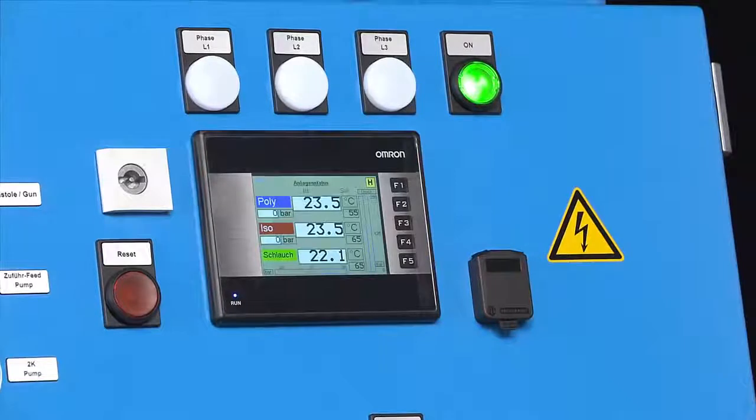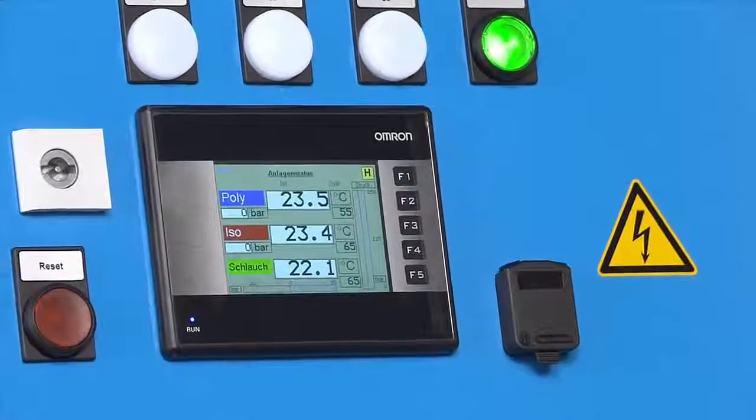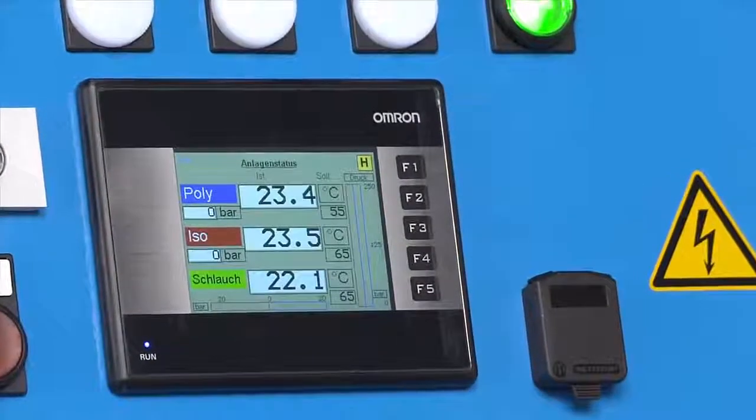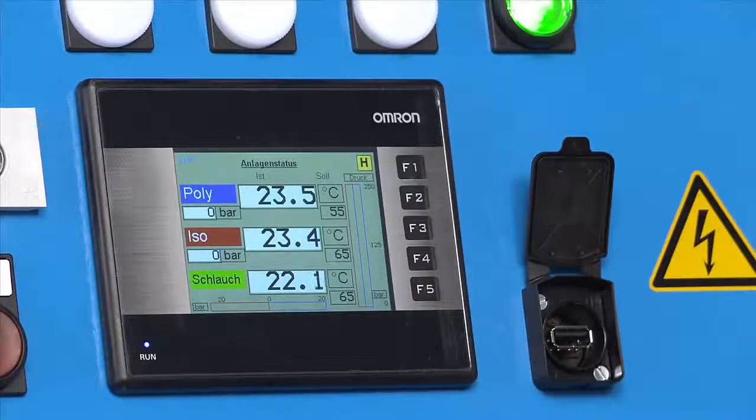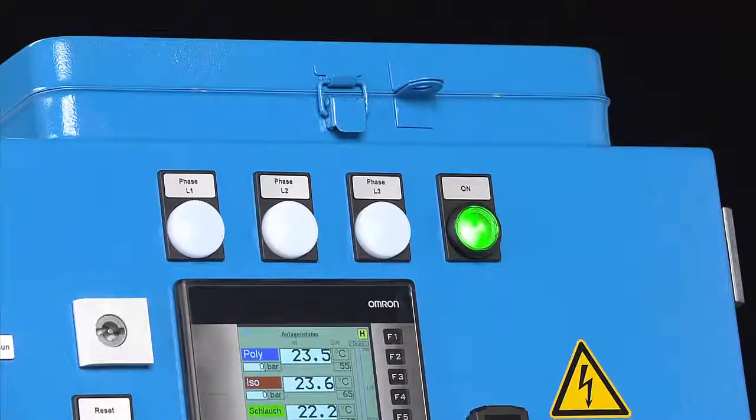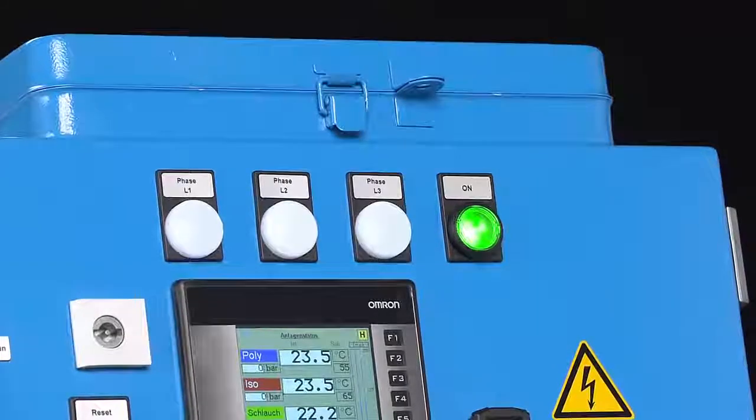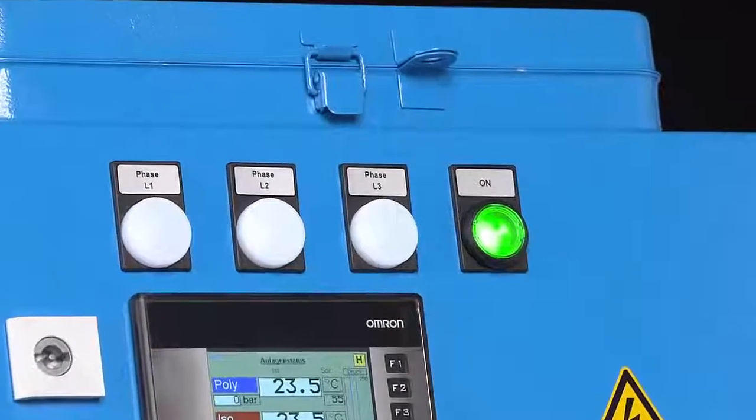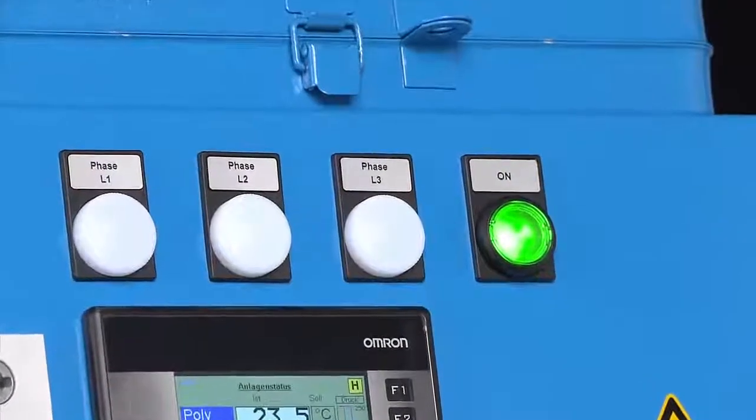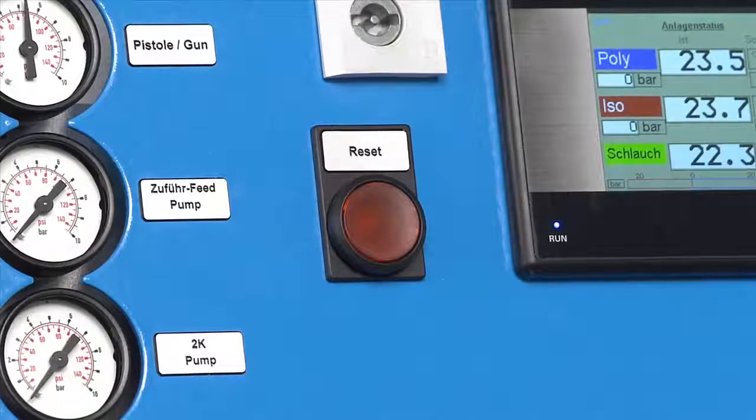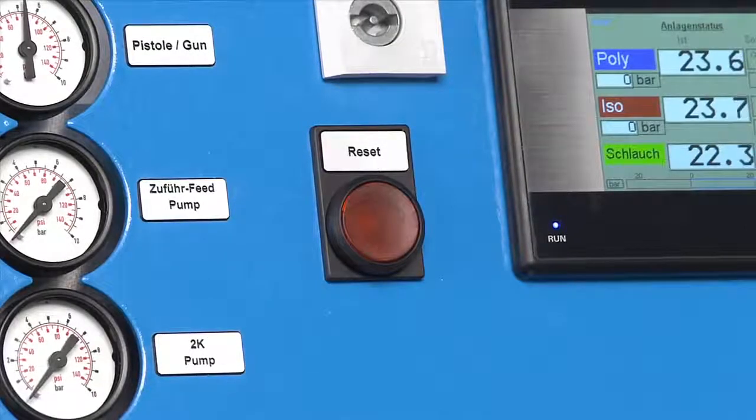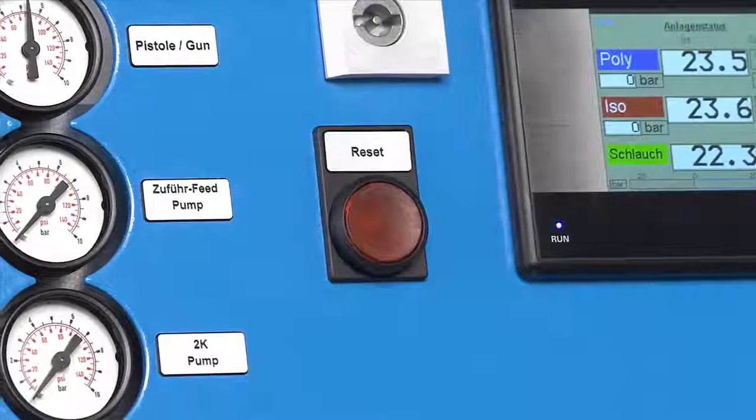This is the touch screen display that you use to control the system. As an option, the system can include a USB interface. This enables the download of system data to record usage on a specific job. The system is turned on by pressing the green on button. On the left, there are control lamps for monitoring phases one to three when using a three-phase power supply. If the system reports an error, you must correct it, then press the reset button to re-engage the unit.